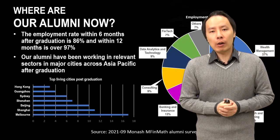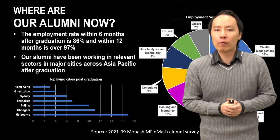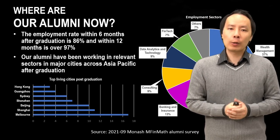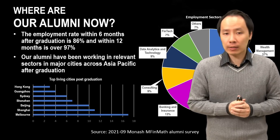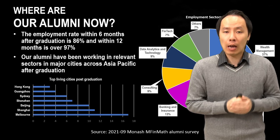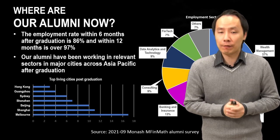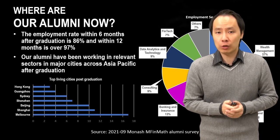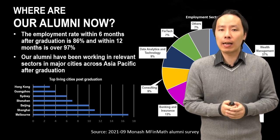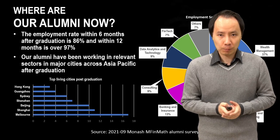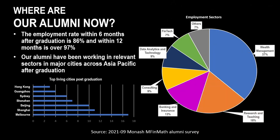So, where are our students now? Our program started in 2016, and since then we have over 100 students graduating from the program. A survey of what they're doing now shows that over 86% obtained a position within six months of graduation, and within one year almost all of them — 97% — had found their first job. As shown in the pie chart, most are working in the finance industry, wealth management companies and banks, but there are also opportunities in fintech companies, consulting, and academic positions.